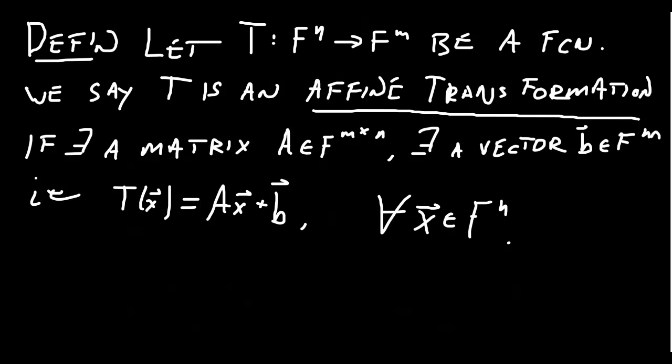We're going to see at the end of this lecture that essentially every isometry is just a combination of these two principles. So before we do that, let's talk about the titular topic for today: affine transformations. We can generalize the notion of a linear transformation in the following way. We have a map T from a vector space Fn to a vector space Fm, and we call it an affine map or affine transformation.